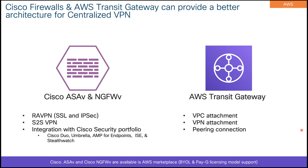If you have Direct Connect going back to your data center, you can still use your on-premises ISE for authentication as well as posture, which is really cool. On the AWS side, you can connect multiple VPCs using VPC peering, but VPC peering is a point-to-point connection. If you have five VPCs, you will have to create a full mesh, and pretty soon you are going to run into trouble because that is not a scalable way to connect VPCs.